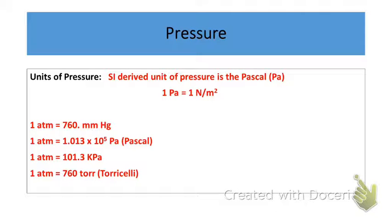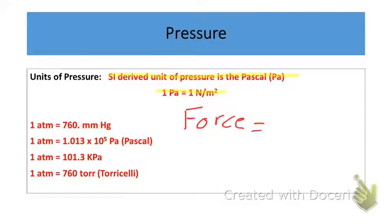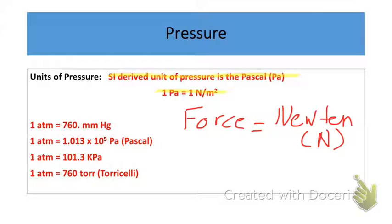Let's look at some units of pressure that I expect you to know, including the relationships between these units. The SI-derived unit of pressure is known as the Pascal. The Pascal, by definition, is one newton per meter squared. The units of force in SI units is the newton (N), and for area it's in squared meters. So if we apply our pressure equation — pressure equals force in newtons over area in squared meters — that gives us units of pascals.